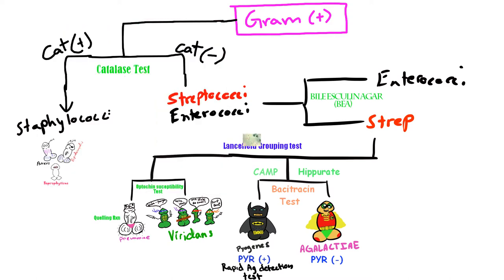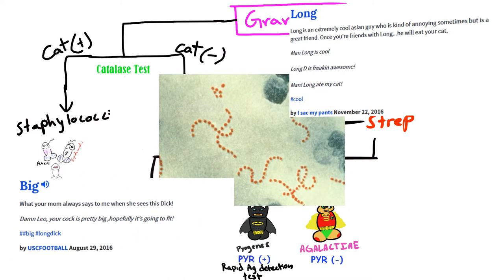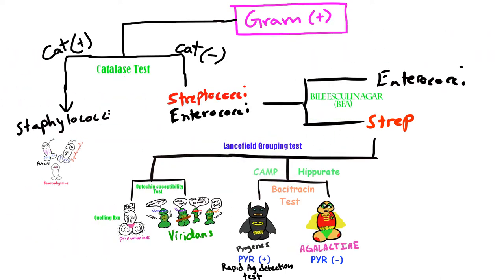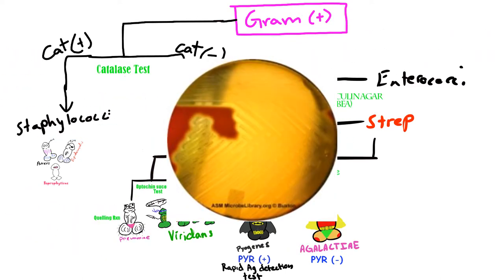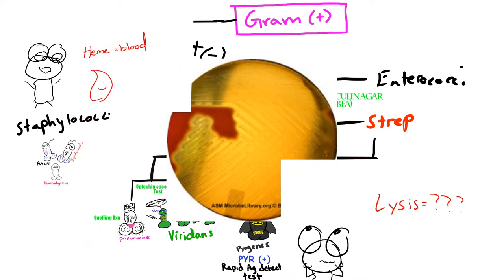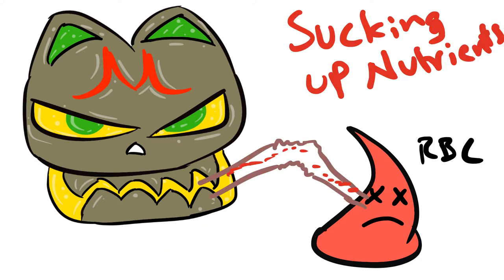Under the microscope, after staining, it looks like every other strep organism with these big, long, hard balls. It's also beta-hemolytic, which means it has an enzyme called hemolysin. This causes complete lysis of red blood cells, meaning all the RBCs have been lysed and all their nutrients have been sucked up.